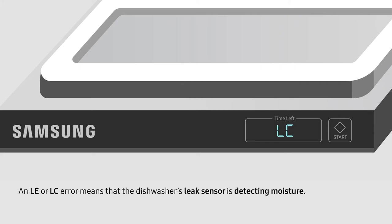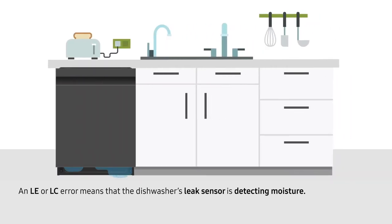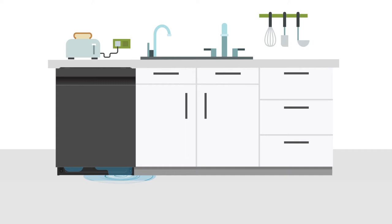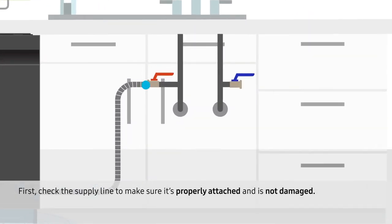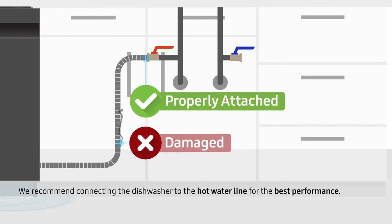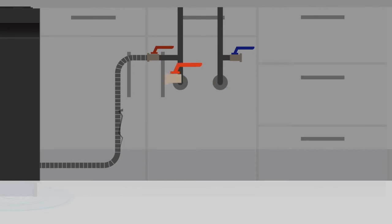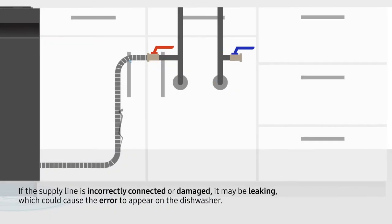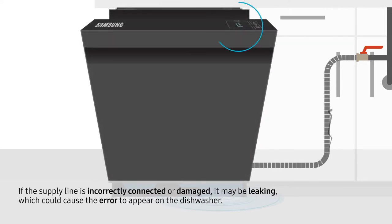An LE or LC error means that the dishwasher's leak sensor is detecting moisture. First, check the supply line to make sure it's properly attached and is not damaged. We recommend connecting the dishwasher to the hot water line for the best performance. If the supply line is incorrectly connected or damaged, it may be leaking, which could cause the error to appear on the dishwasher.